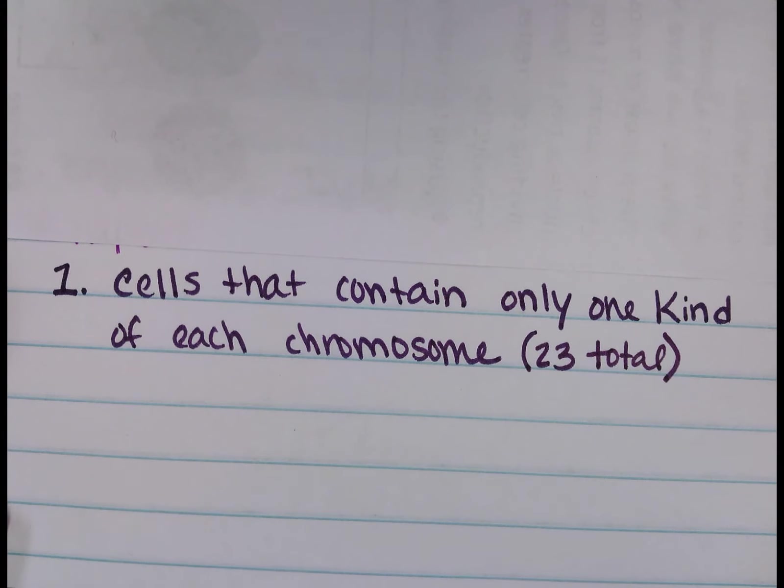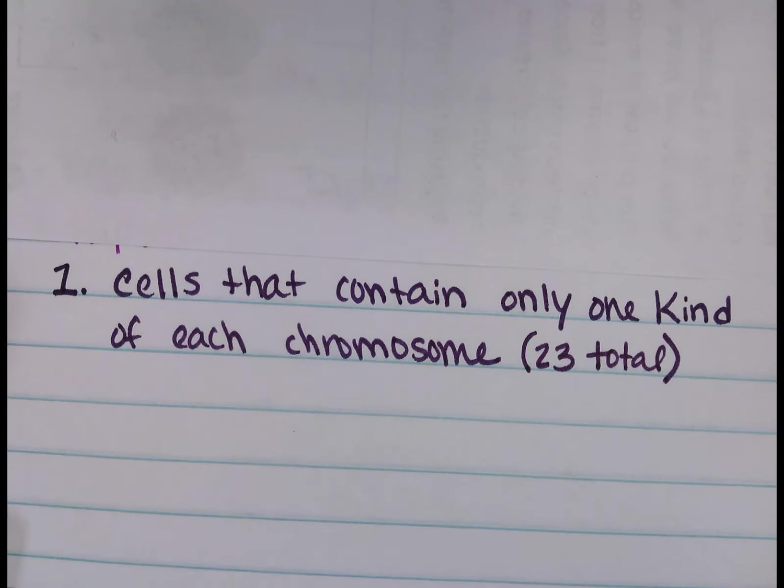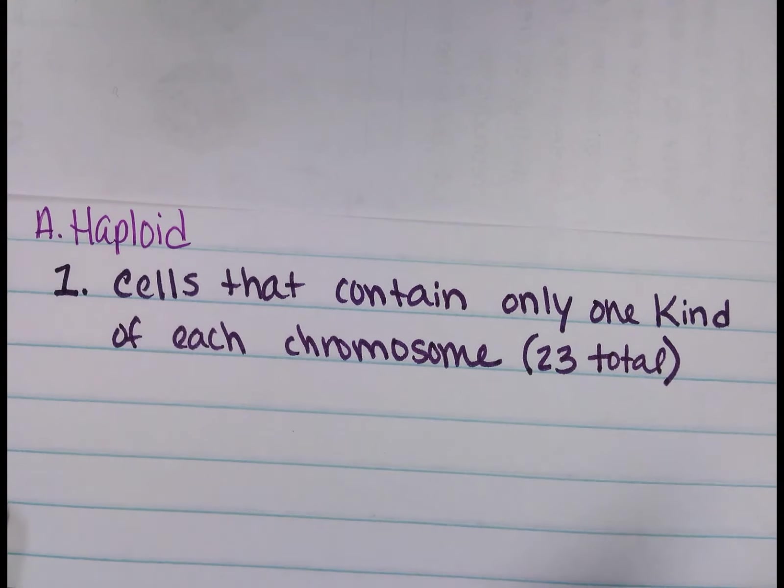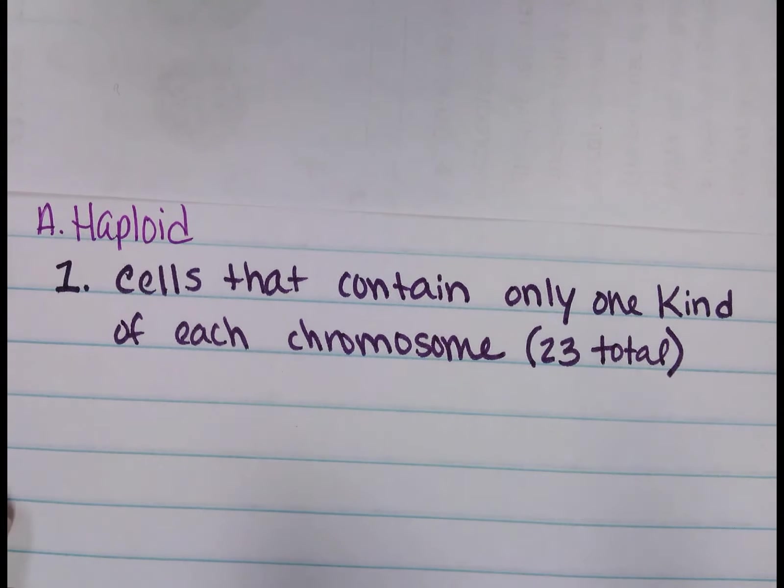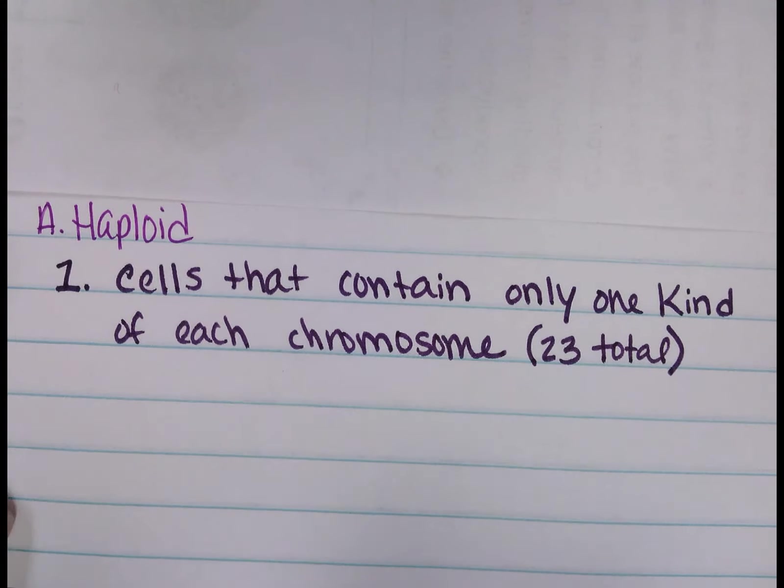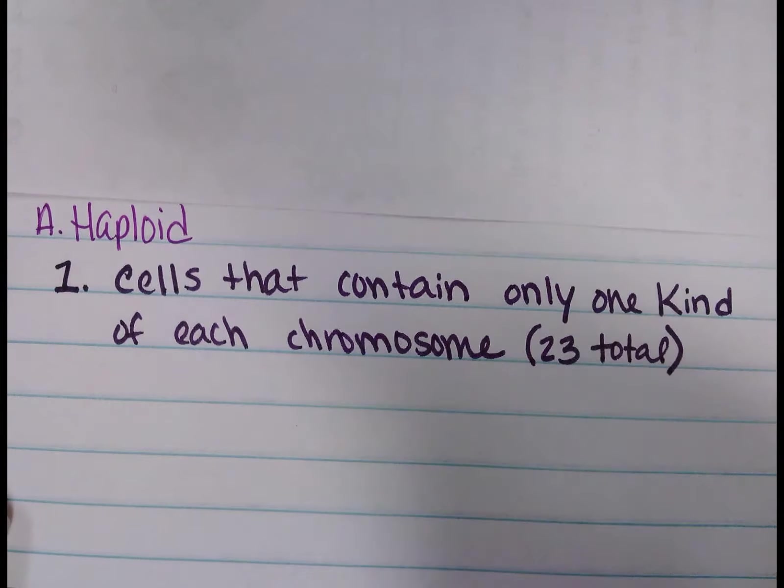All right, so haploid cells are half. They contain only half the number of chromosomes, which in this case is going to be 23 total. Remember, the body cells all have 46.